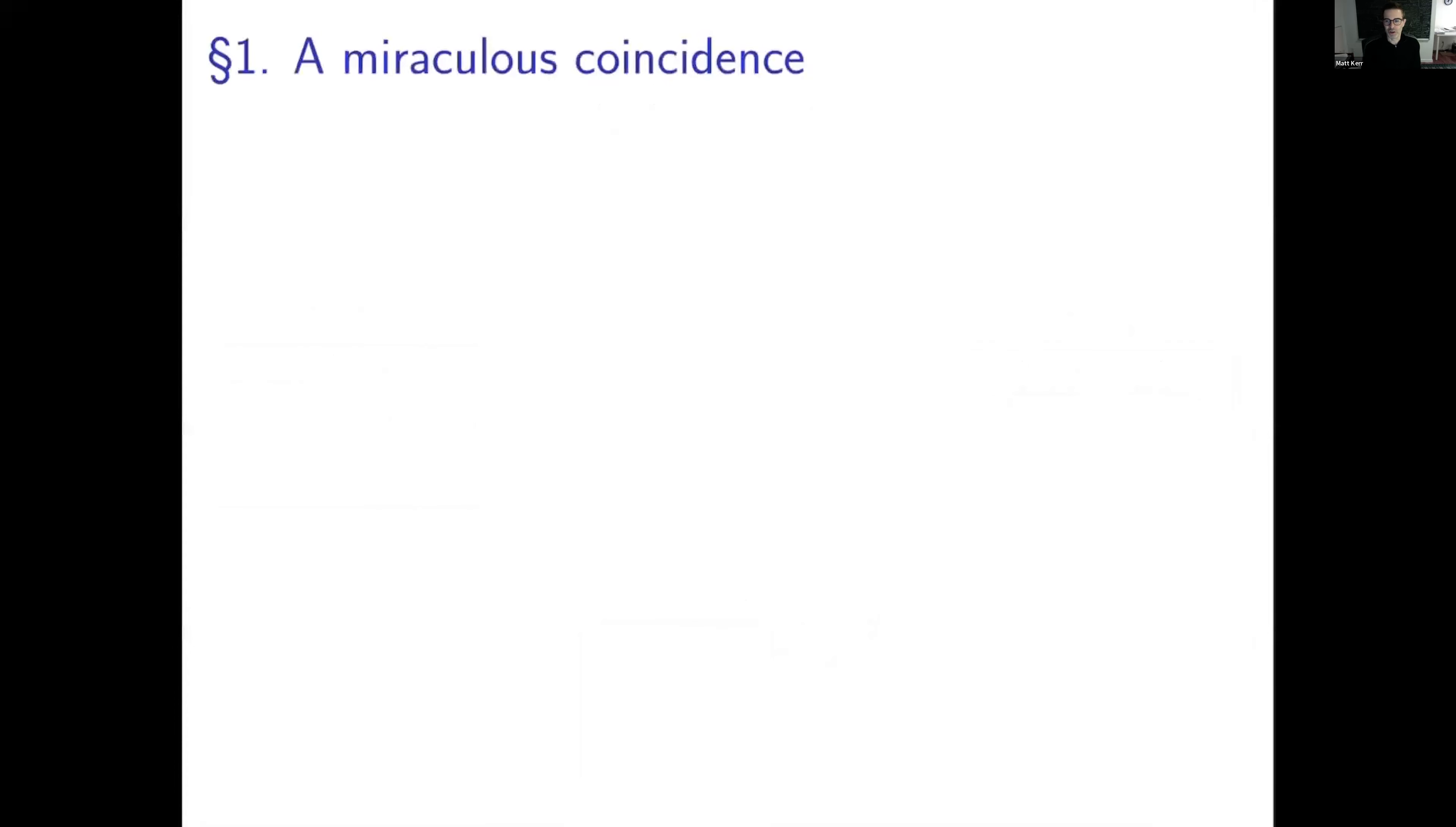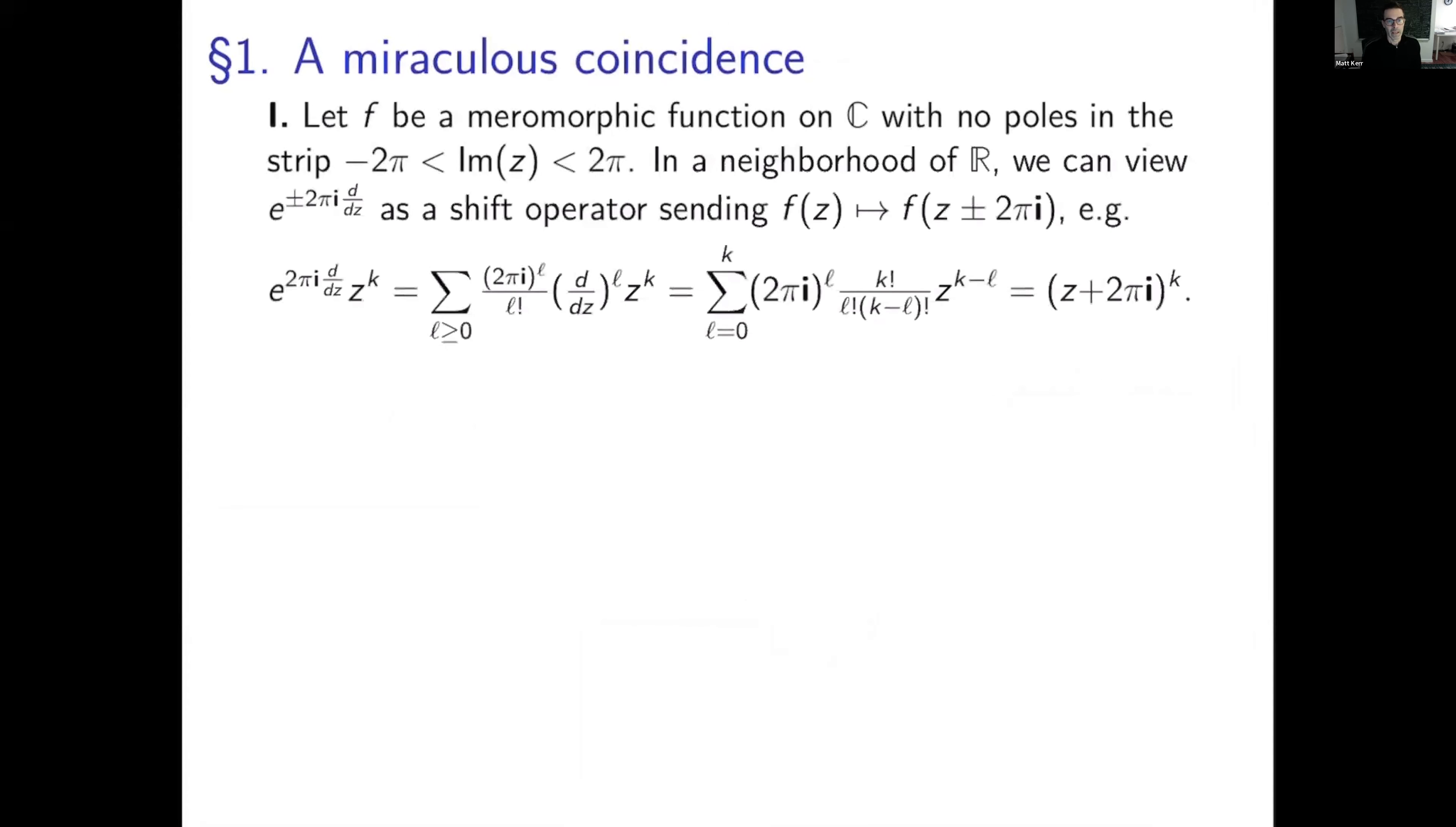Okay, so let's start with a coincidence. This is going to be a purely numerical coincidence from considering two apparently completely different problems. So I start with a meromorphic function on the complex plane with no poles in a big strip about the real line. Then we can view e to the 2 pi i d/dz as a shift operator, shifting the argument of such a function by 2 pi i. So the basic calculation, if you were to write something locally as a power series about zero, is what's shown there. It's not difficult at all.